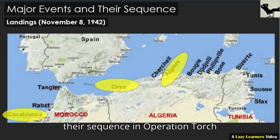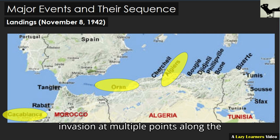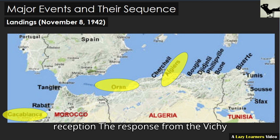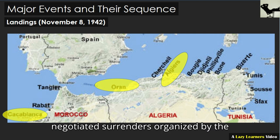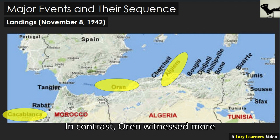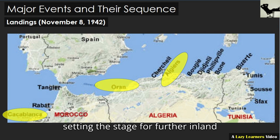Major events and their sequence in Operation Torch. Landings — November 8, 1942. Initial Assault: Allied forces commenced their invasion at multiple points along the North African coast, primarily targeting Casablanca in Morocco and Oran and Algiers in Algeria. Resistance and Reception: the response from the Vichy French forces was inconsistent. In some regions, like Algiers, resistance was minimal due to pre-negotiated surrenders organized by the French resistance and Allied operatives. In contrast, Oran witnessed more determined defensive actions, delaying the Allied takeover. These initial landings were crucial to establish beachheads for bringing in more troops and supplies, setting the stage for further inland advances.